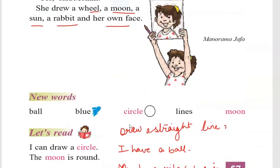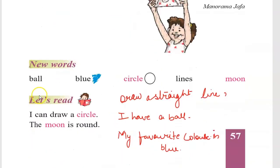So this was our whole story. New words: ball, blue, circle, line, smooth. I have a ball. My favorite color is blue. I can draw a circle. Draw a straight line. Moon is round.